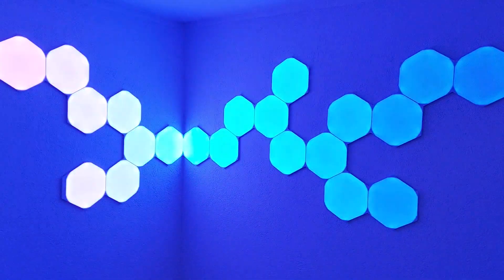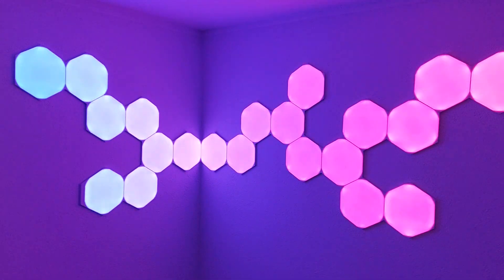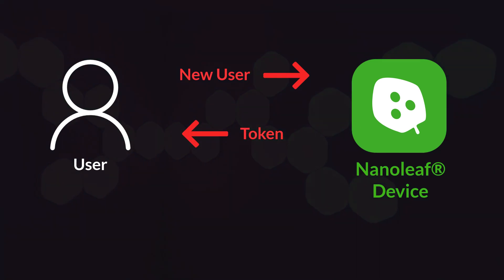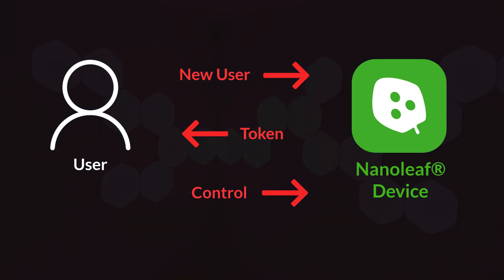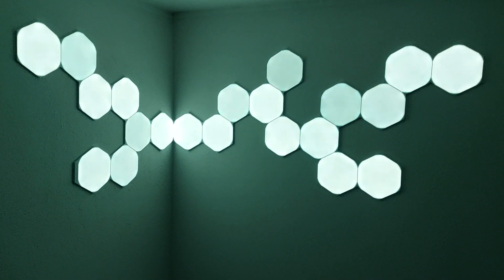To control this device programmatically, we first need to register a new user to the device. By registering a user, we will receive a token that must be included in every request to the API. Once we have obtained that token, we can control the device using HTTP requests to the API endpoint of the device.